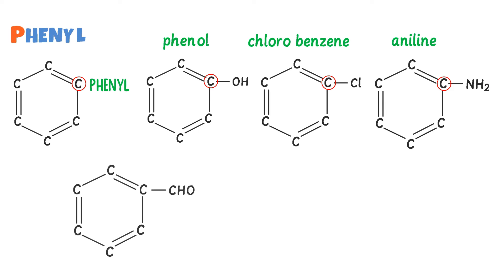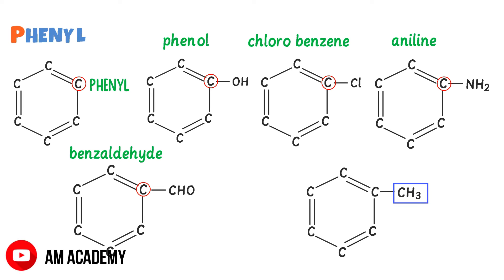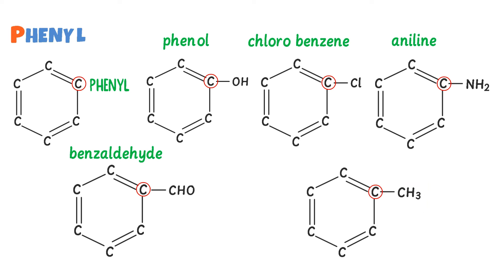Fourthly, consider this organic compound — the CHO functional group of aldehyde is bonded to Phenyl, so it is Benzaldehyde. Lastly, consider this organic compound — here an alkyl group like methyl (CH₃) is bonded to the Phenyl carbon, so it is Toluene. Thus by this way, we can name organic compounds of Phenyl. I hope that you have learned all about the common names of organic compounds.